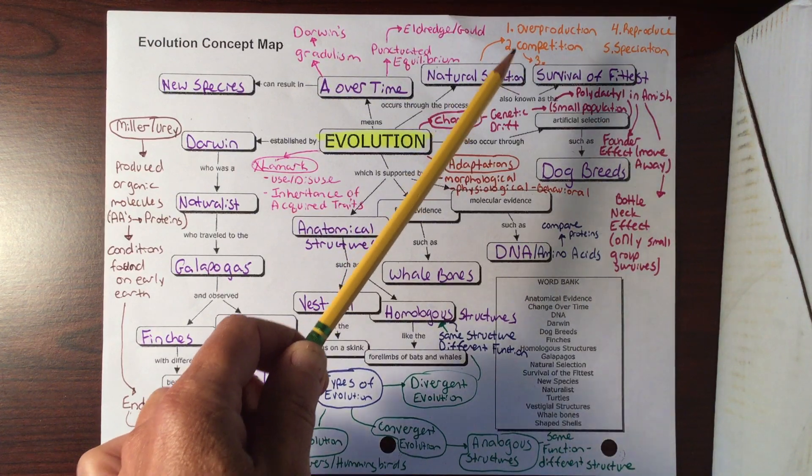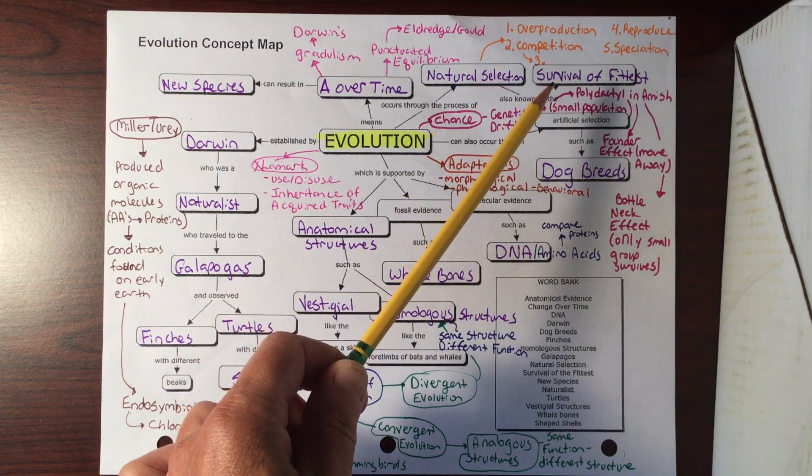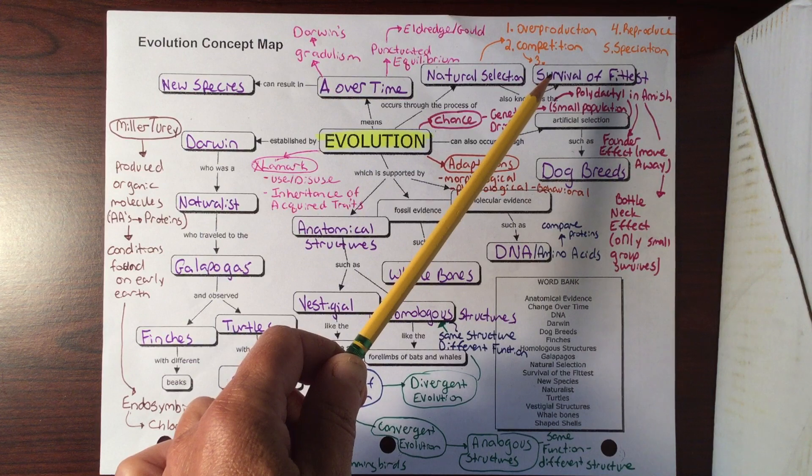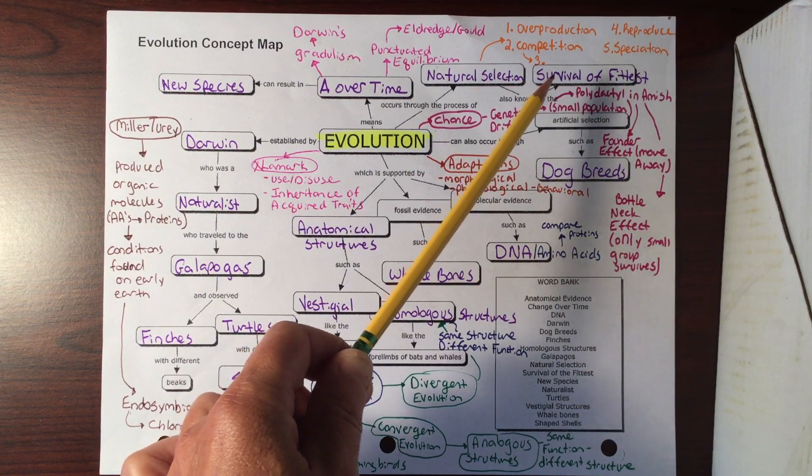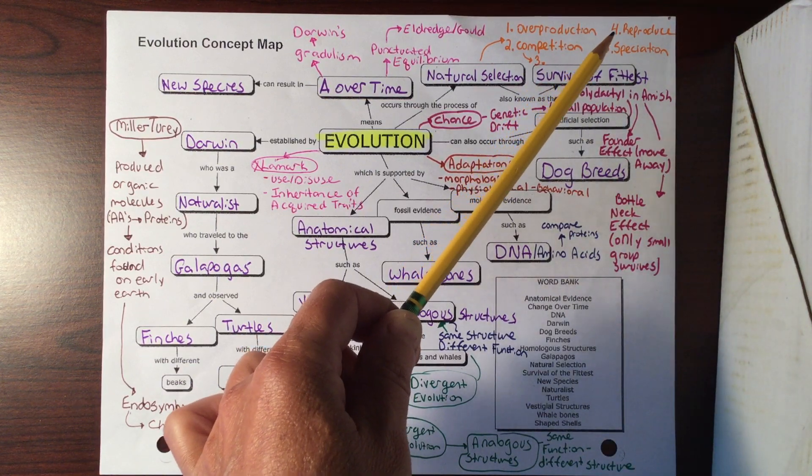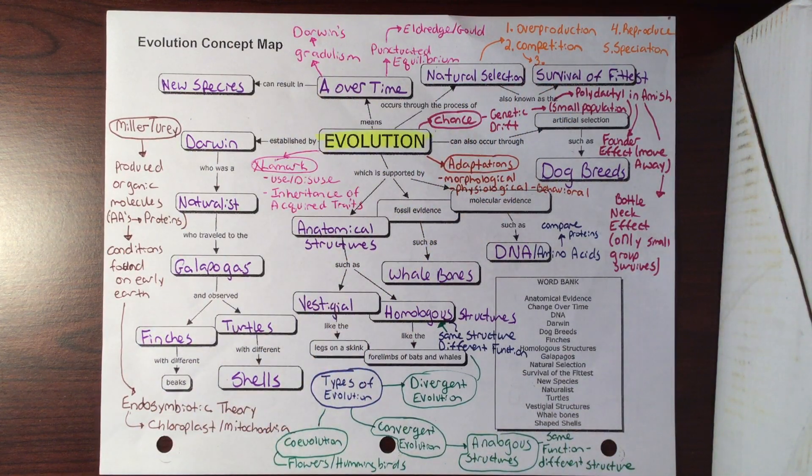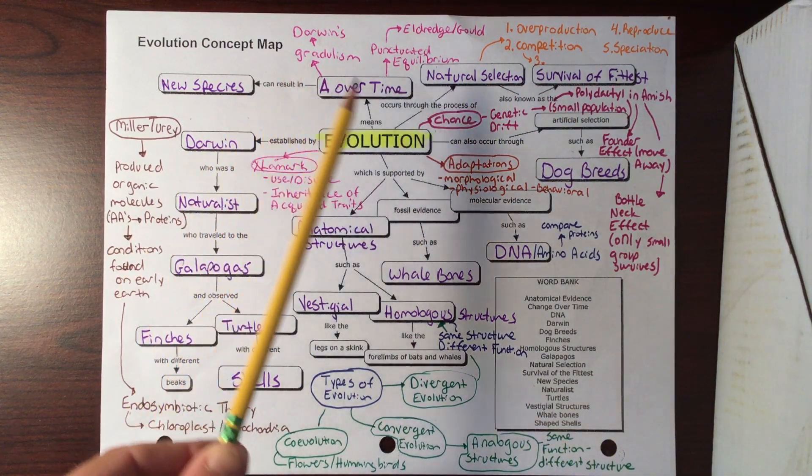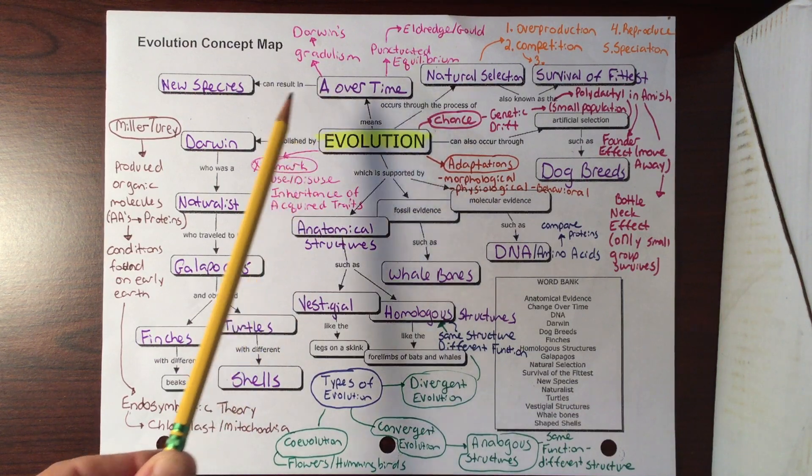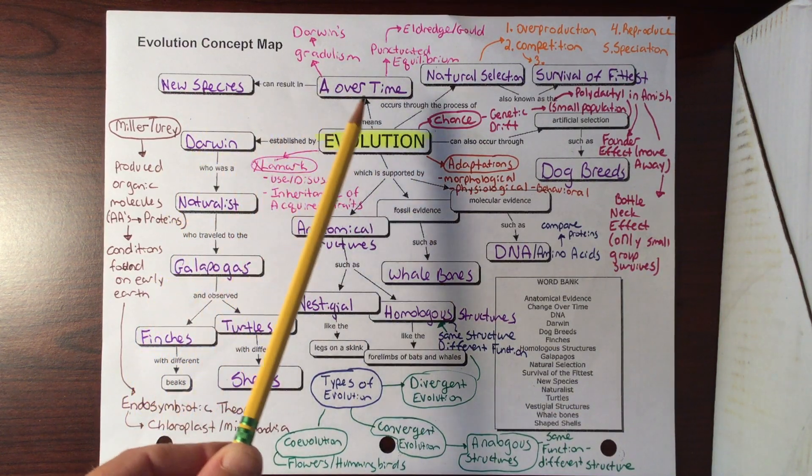Since they overproduce, we're going to have this competition. The ones that are the strongest are going to survive, so we have survival of the fittest. Those that survive the best, that have the best traits, are going to reproduce. Eventually, over thousands if not millions of years, maybe they produce a new species there.